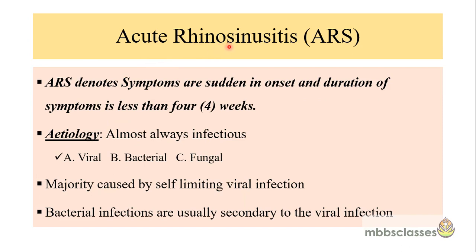In this video I will be talking only on acute rhinosinusitis, which denotes symptoms that are sudden in onset with duration less than four weeks. The etiology is almost always infectious. The most common predisposing infection is viral. Bacterial infection is in the majority secondary to viral infection, and there is also fungal etiology, which is discussed separately in the fungal rhinosinusitis video. The majority of cases of acute rhinosinusitis are self-limiting because they are caused by viral infection.